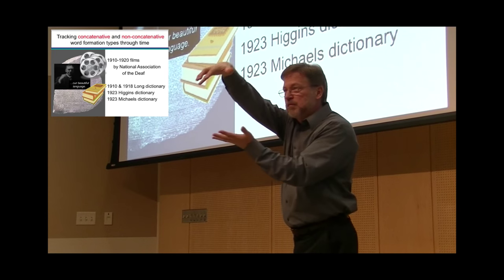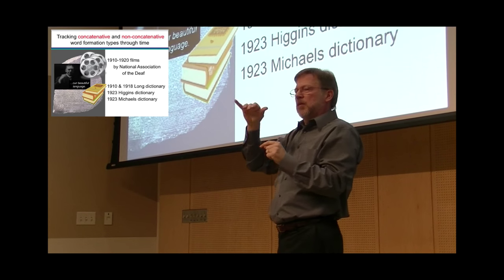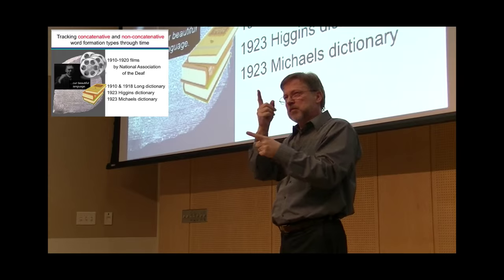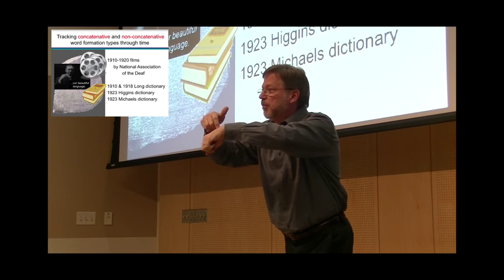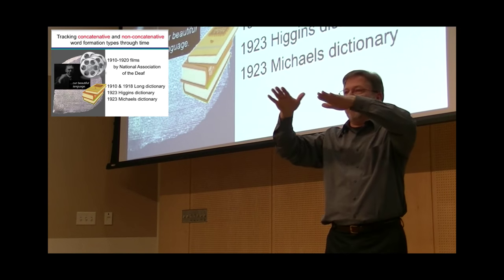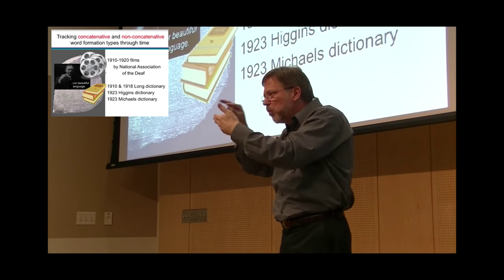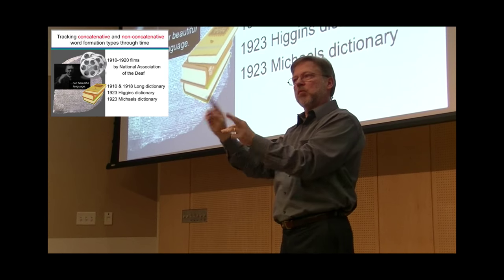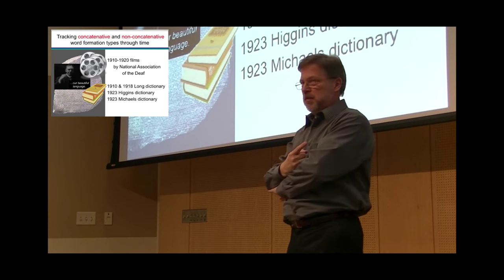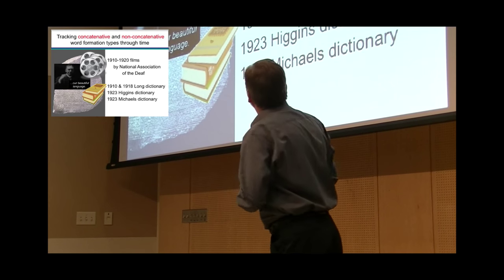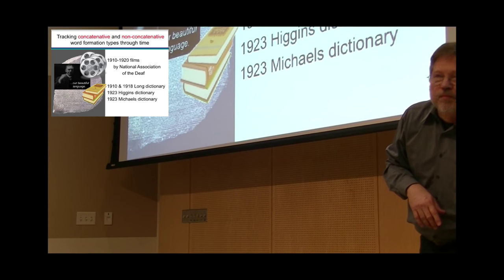I noticed today that interpreters would prefer to have a single sign for a single word. They like that one-to-one correspondence that makes it easier for them to do their job. However, historically, that's not the case. We do not have simultaneous representation of concepts. We have sequential representation or non-concatenative representation of concepts that over time become reduced to a concatenative form. If we look at how words were organized historically and count the number of segments or elements that represent a concept, you can then do a comparative analysis between the older version of ASL and the modern version of ASL. We created a database based on our archaeological research. We have the 1910 to 1920 films published by the NAD and three dictionaries. We also refer to the dictionaries that were contemporaneous to the production of the films.